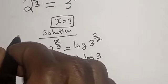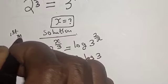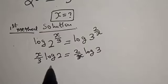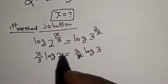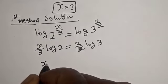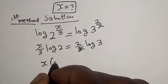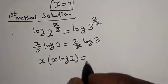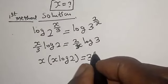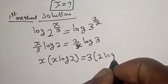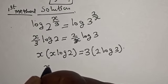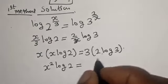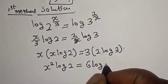We're going to solve this in two ways. Let's call this the first method. From here we can cross multiply: x multiplied by x log 2 is equal to 3 multiplied by 2 log 3. This gives x squared log 2 is equal to 6 log 3.